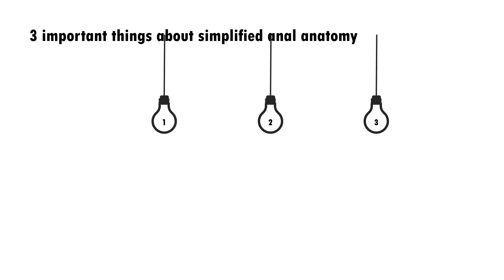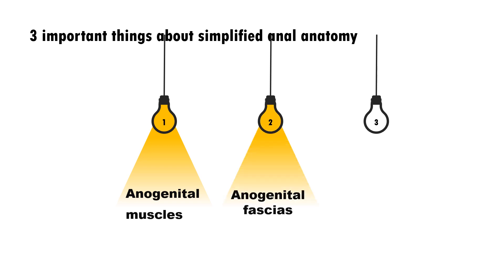Anal anatomy for fistula surgery is simply divided into three parts: first is anogenital muscles, anogenital fascia, and anogenital spaces. If we know about these three, most of the understanding is done.